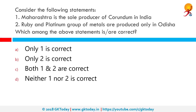Consider the following statements: 1. Maharashtra is the sole producer of Corundum in India. 2. Ruby and platinum group of metals are produced only in Orissa. Both statements 1 and 2 are correct. Maharashtra is in fact the sole producer of Corundum and is the second largest producer of manganese after Orissa. The principal mineral-bearing belts in Maharashtra are the Vidarbha area in the east and the Konkan area in the west. Orissa hosts the country's sole resources of ruby and platinum group of metals.